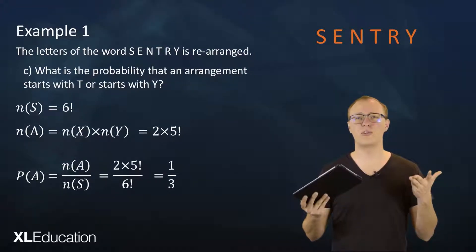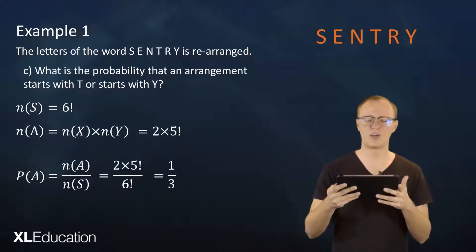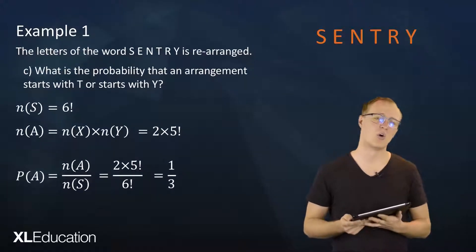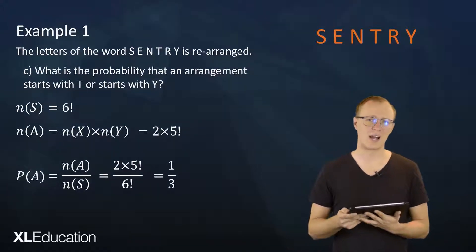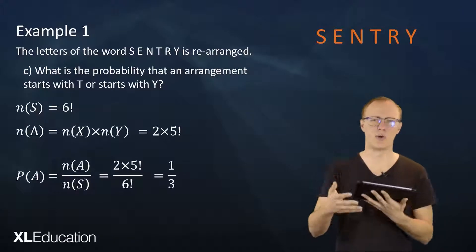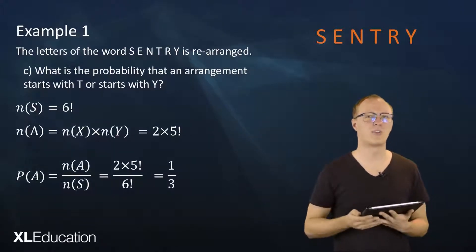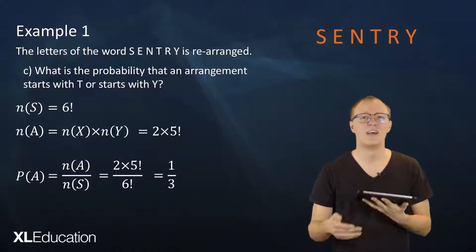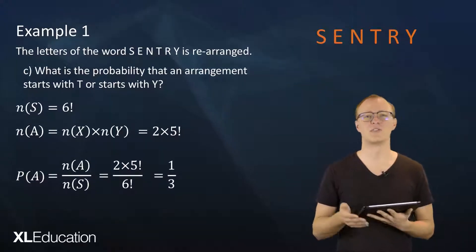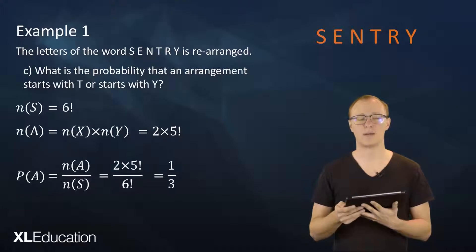So one out of every three arrangements of 'century' starts with either a T or a Y. If you select a random arrangement, there's a one in three chance you'll end up with a selection that starts with T or Y.